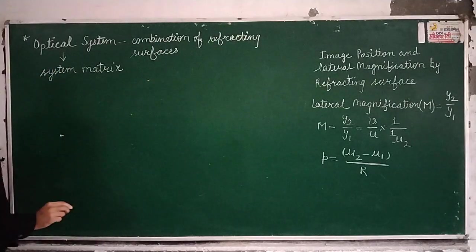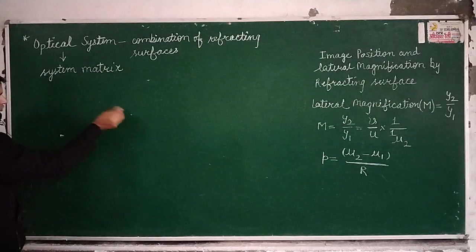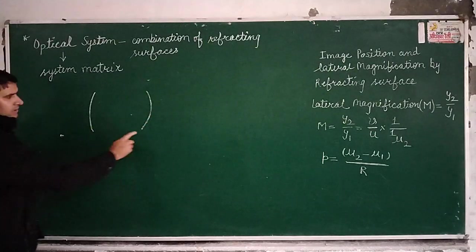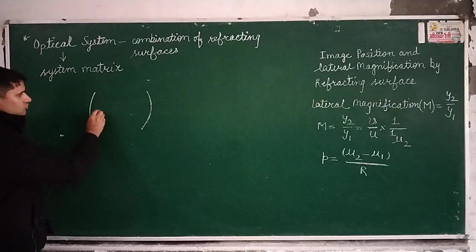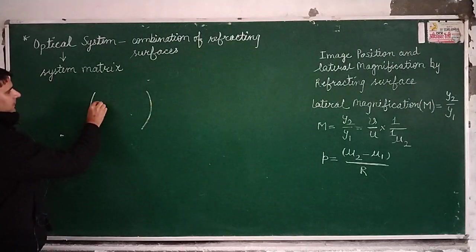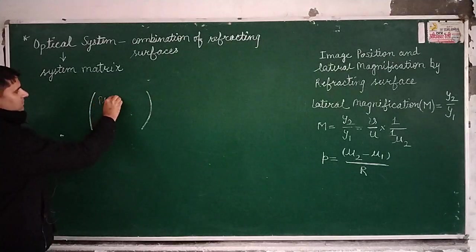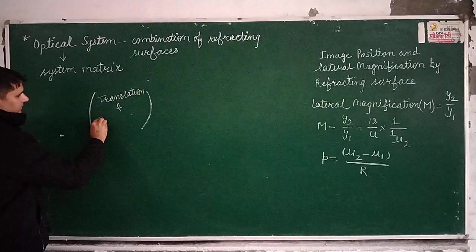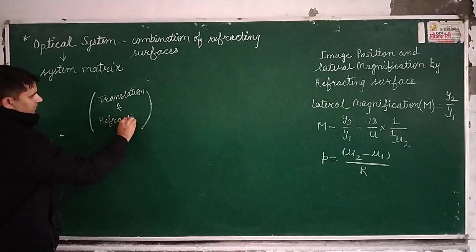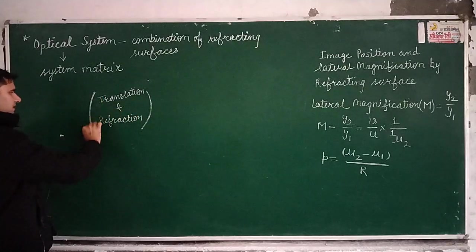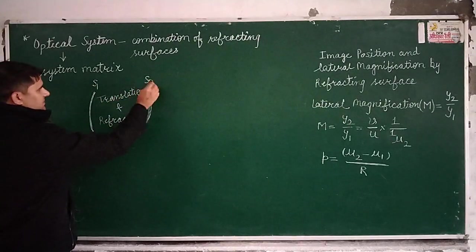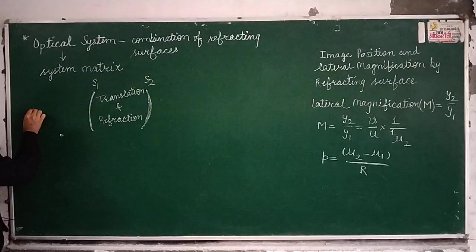Let me make a diagram. This is the first refracting surface S1 of the optical system, and this is the last refracting surface S2. In between these two surfaces, there will be propagation of light — translation and refraction. This is the optical axis of the system.